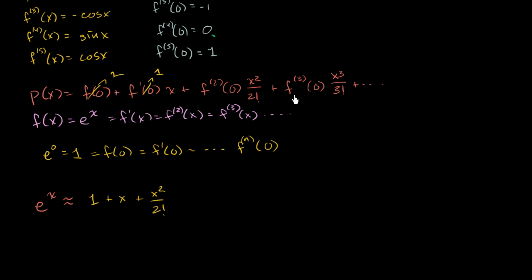All of these things are going to be 1. So the third term is x to the third over 3 factorial. Plus x to the third over 3 factorial. And I think you see the pattern here. We just keep adding terms: x to the fourth over 4 factorial, plus x to the fifth over 5 factorial, plus x to the sixth over 6 factorial.